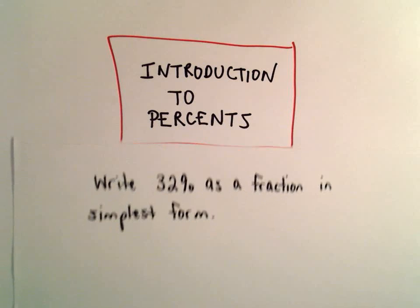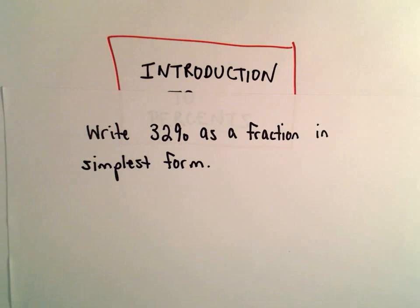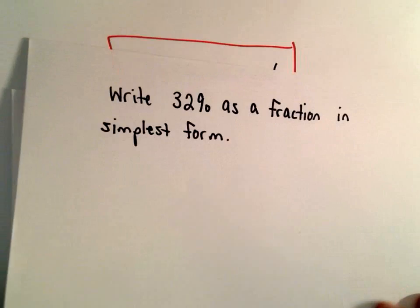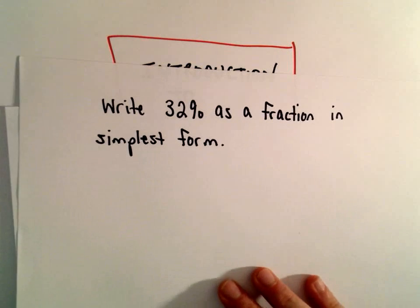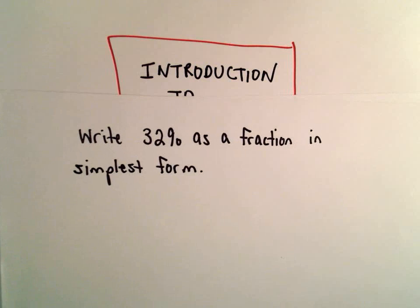Here we're going to look at an example of writing a fraction in the simplest form or most reduced form. Being able to go from a percentage to a fraction to a decimal is certainly useful to be able to switch interchangeably between those three.